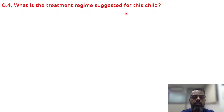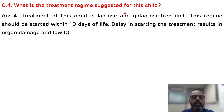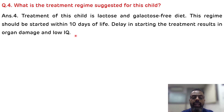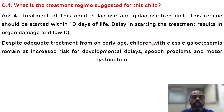Question four: the treatment regime. Treatment is starting a lactose and galactose-free diet as soon as possible — ideally within 10 days of life. Delay in starting treatment results in organ damage and low IQ, and once mental retardation sets in you cannot reverse it. This special diet can be withdrawn after 4 to 5 years of life, once the alternative pathway activated by galactose-1-phosphate pyrophosphorylase becomes active. Despite adequate early treatment, children with classical galactosemia remain at increased risk for developmental delays, speech problems, and motor dysfunction.